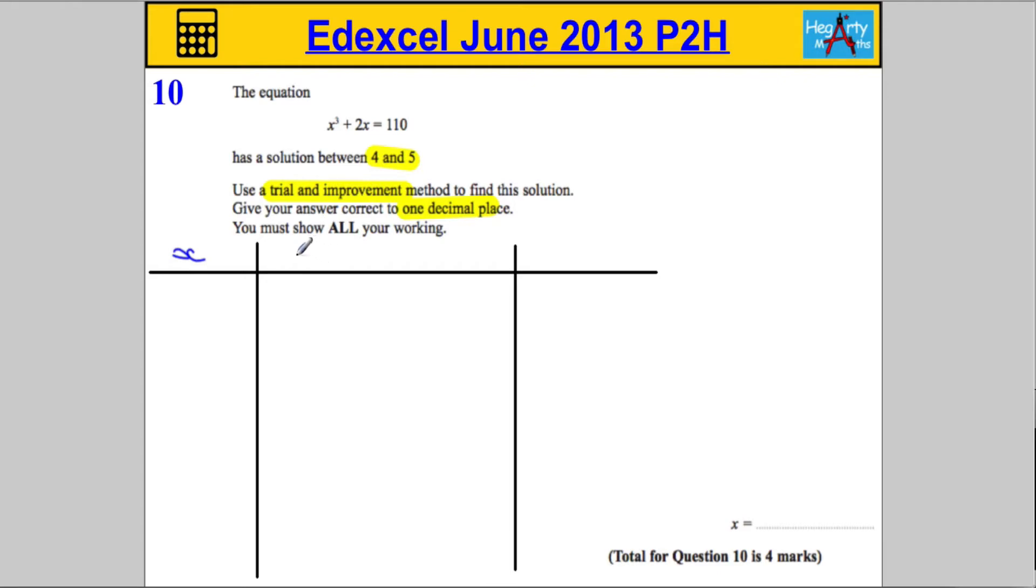We're going to substitute these values into the expression x³ + 2x and we're going to see how it compares to the answer of 110. Then what we're going to do is we're going to give a comment after each iteration, after each time we try a number.